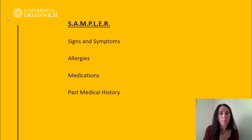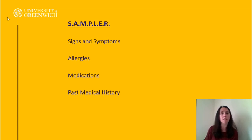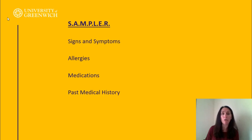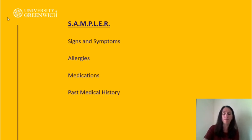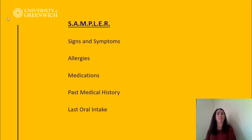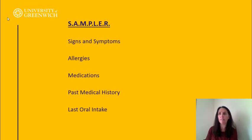That's not just paracetamol and ibuprofen — you might be talking about things like herbal remedies or CBD oil. P in SAMPLER is past medical history. Most patients will give it to you, but sometimes it takes a little more to squeeze it out of them. You might get clues from the medication — if you're looking at the prescription list.